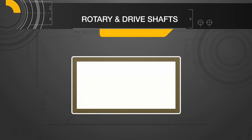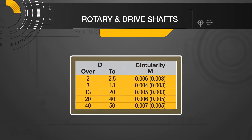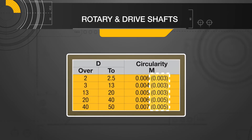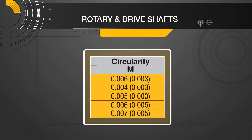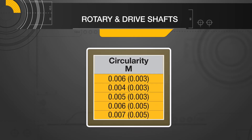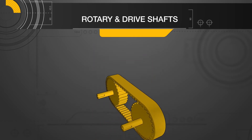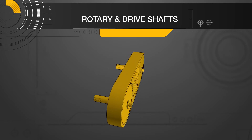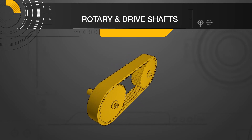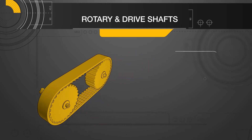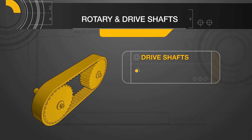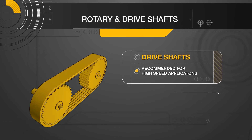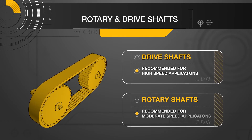Here is a chart showing the circularity tolerances of rotary and drive shafts. The drive shaft tolerances are shown in parentheses. As you can see, the drive shaft numbers are smaller than the rotary. This circularity tolerance is important as it relates to the shafts rotating accurately without causing unnecessary vibration. Since drive shafts have a higher tolerance, these shafts are recommended for use in high speed applications, and rotary shafts for moderate speed applications.